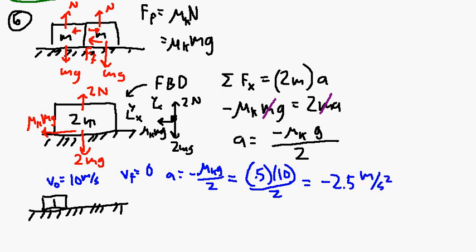So let's do, I'm going to go ahead and find the time it takes for these things to stop, and you'll see, because that's going to be necessary for part C. So delta V over delta T equals A, this is constant acceleration.